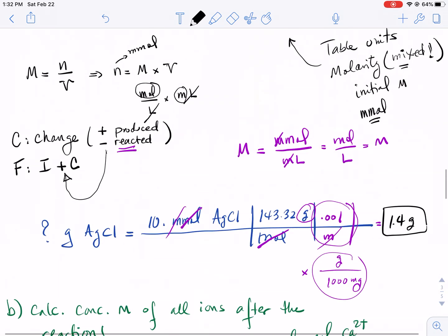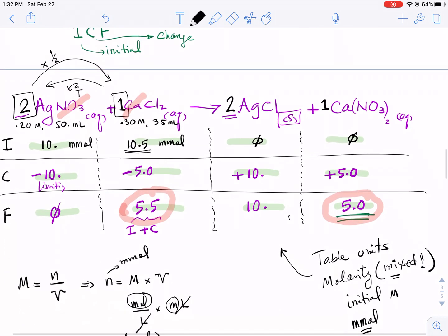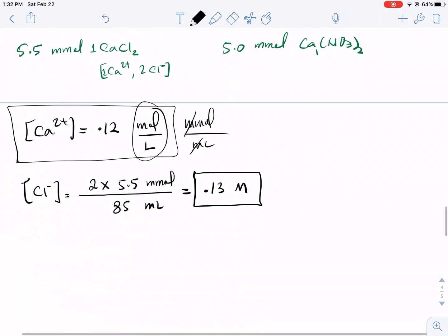Now let's move over to nitrate. We have 5 millimoles of calcium nitrate. Look at the ratio - there's 2 to 1, so 2 moles of nitrate for every mole of calcium nitrate. So if you have 5 millimoles, you multiply times 2. My nitrate concentration is 2 times 5.0 millimoles from the calcium nitrate, dividing it by 85. All these ions are in 85 milliliters. This is 10 divided by 85, which is 0.12 molar.